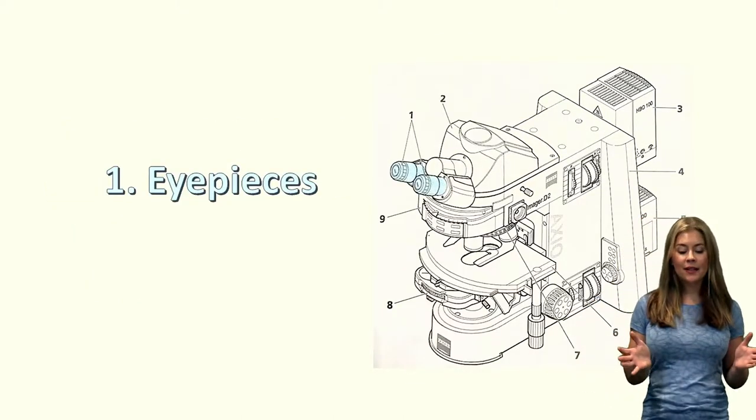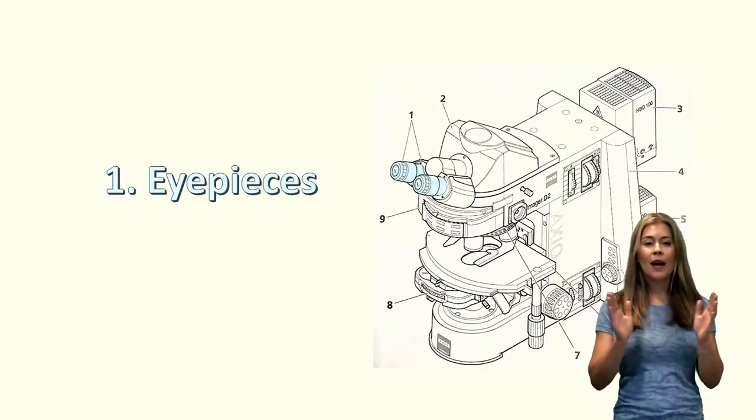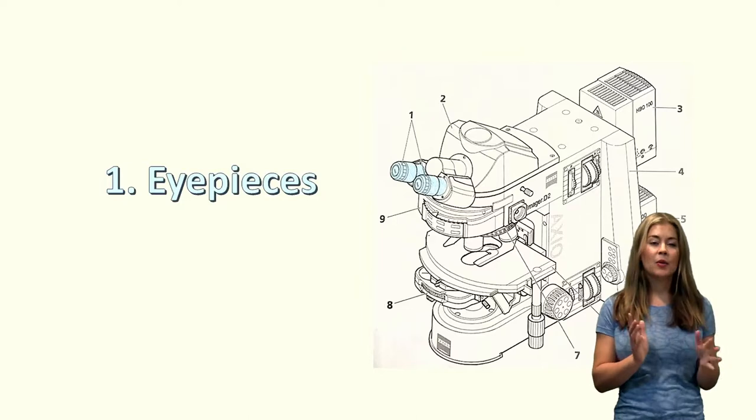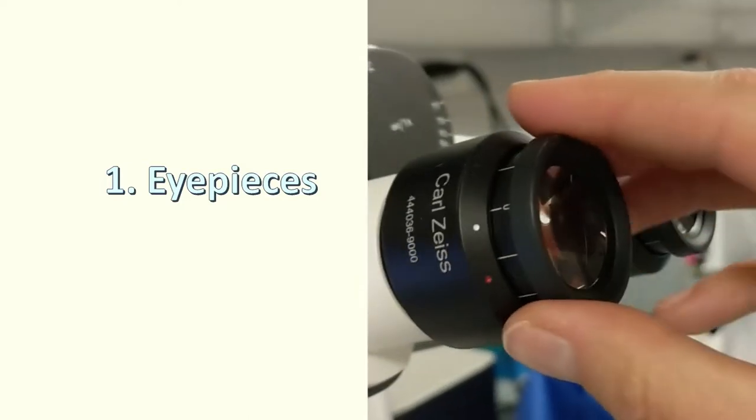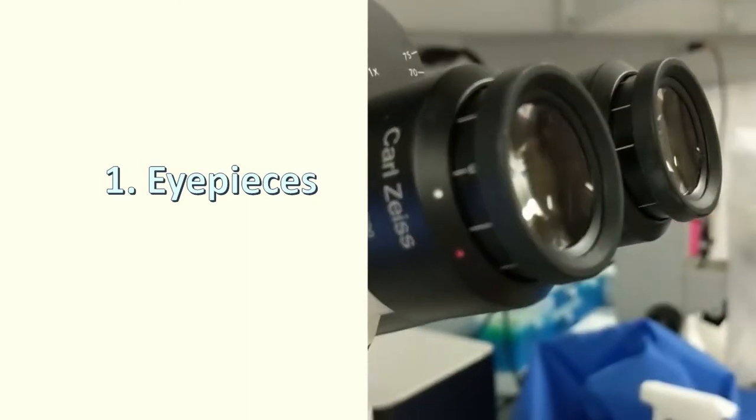First things first is eyepieces. That's labeled number one. You can move them out or inwards depending on the spacing between your eyes and what feels comfortable for you. See there's a red dot and a white dot. Normal viewing you want to line that zero up with that white dot on each side.